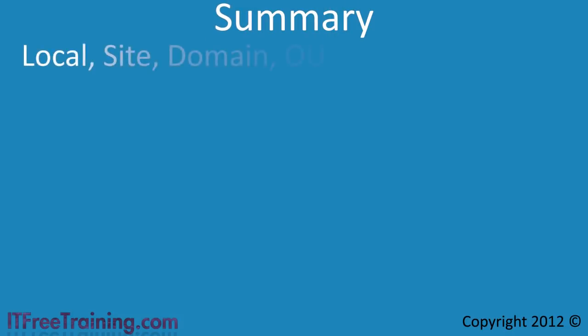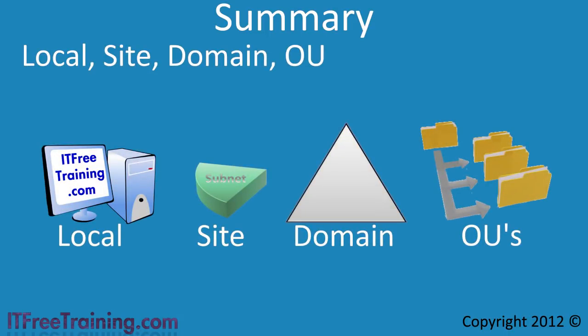In this video, I have looked at the order group policy is applied: local, site, domain, and then OUs. It is important to understand this order when troubleshooting group policy in your domain. If you configure a group policy at the domain level, this will affect all computers and users in the domain — including domain controllers and administrators. Disabling the control panel for the domain administrator was probably not the result originally intended. This is just one example of why you should be careful when configuring group policy, as a wrong setting can affect all the users and computers in your domain.